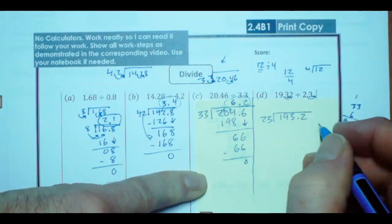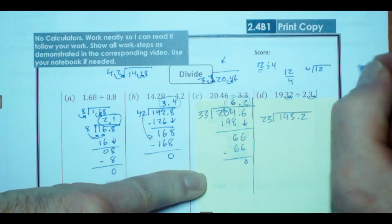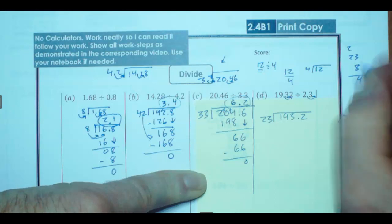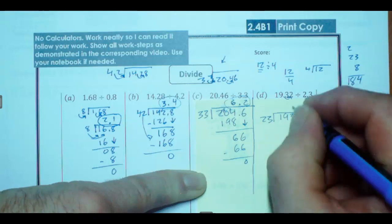Does 23 go into 193? Seven or eight times. Let's try eight first. Let's go for broke here. Eight times 23. Eight times three is 24. There's the four. And there's the 20. Eight times two is 16. Plus two is 184. Eight times three is 24. That 184, that's pretty doggone close. We're going to take that eight.